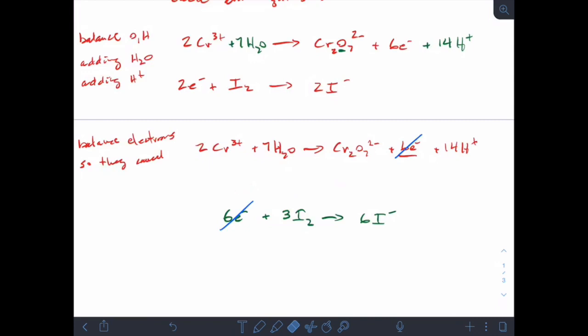So now our final step here is to combine equations. Anything that's the same on the same side, I add together. Anything that's the same on opposite sides, I subtract. The iodine equation has no oxygens or hydrogens or waters or anything, so there's nothing for me to really mess with. So at this stage, I'm just going to combine those equations and our result will be...